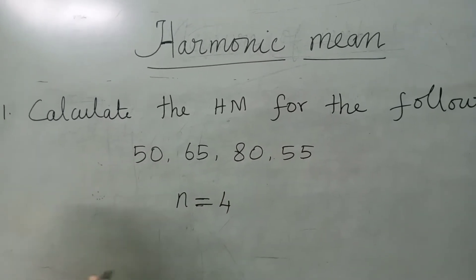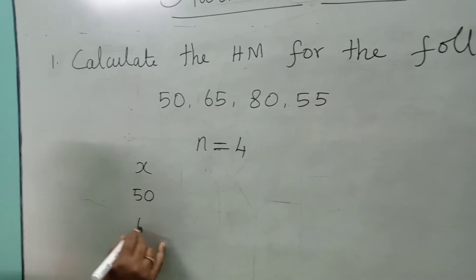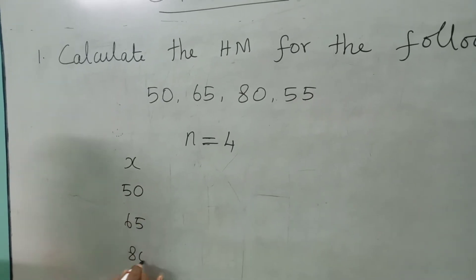We are going to draw the table column first. X values are 50, 65, 80, 55.